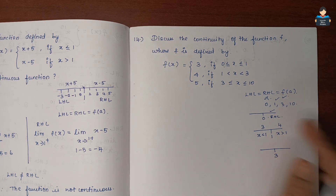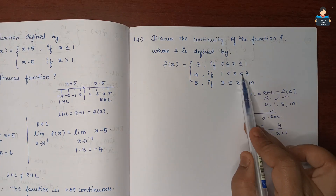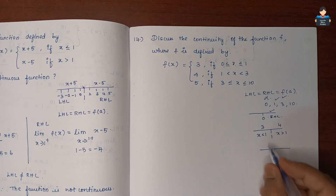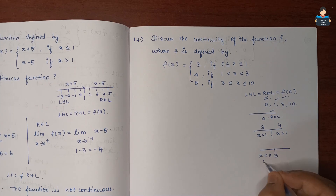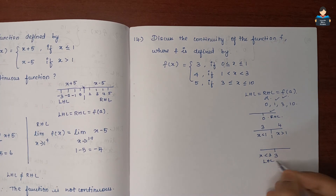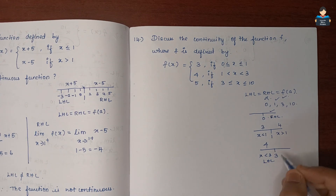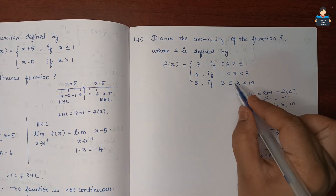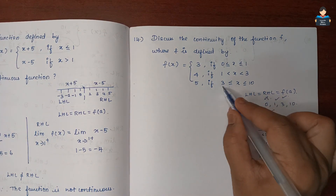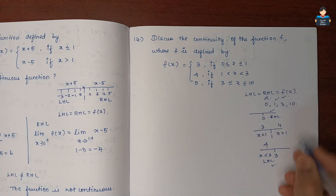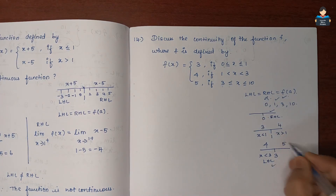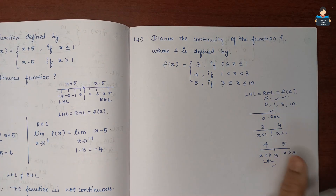LHL is 3 where x is less than 3. Here the value is 3 for LHL. Then for x greater than or equal to 3, the value is 4. For RHL where x is greater than 3, the value is 5. We apply these respective function values at the boundary points.